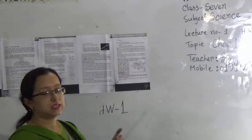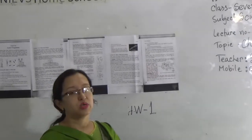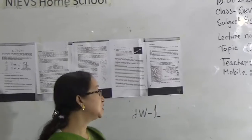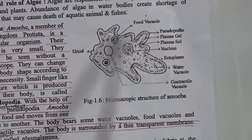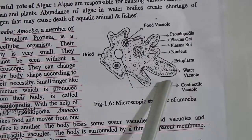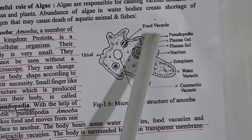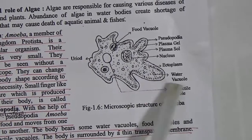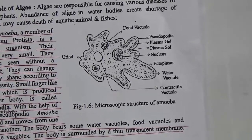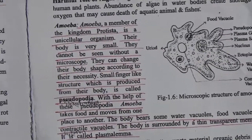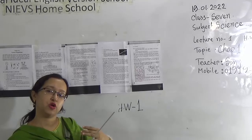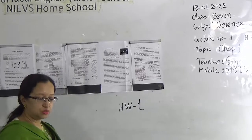Amoeba grows in water, wet soil, roots, and organic debris at the bottom of ponds. Looking at the microscopic structure of amoeba: it is a unicellular organism with only one cell. When it creates a finger-like structure from its body, we call it pseudopodia; this helps amoeba take food and move from one place to another. The amoeba body is covered with a transparent membrane called plasmalemma. Inside we see food vacuole, pseudopodia, plasma gel, plasma sol, nucleus, ectoplasm, water vacuole, and contractile vacuole.